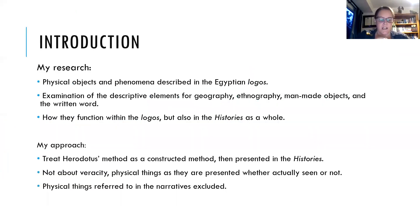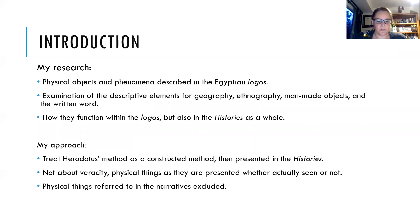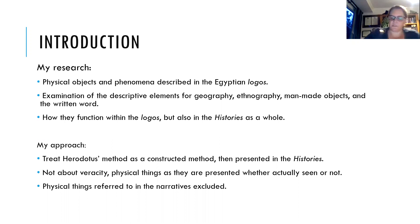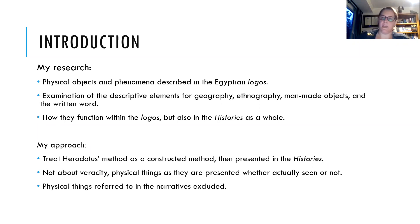The focus of my research is an exploration of the role of physical objects and phenomena in the Egyptian Logos — book two and the very beginning of book three up to chapter 37. I'm focusing specifically on the elements that Herodotus uses to describe physical things, both objects and phenomena. My interest is not only in how they function within his historical method but also how else they might function. My research focuses on how he describes them and how this may contribute to the overall purpose of the histories — not on veracity, but on function and presentation, specifically the evidentiary value and the visual impact of physical things.